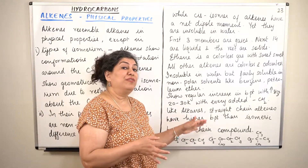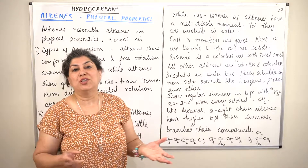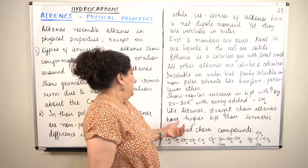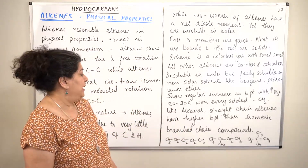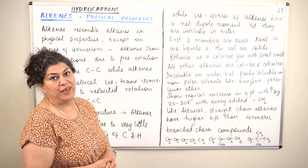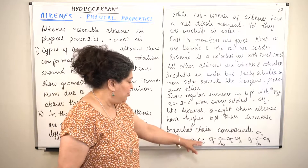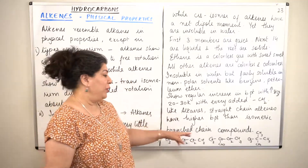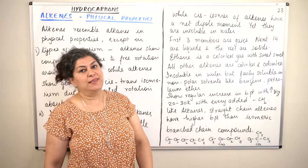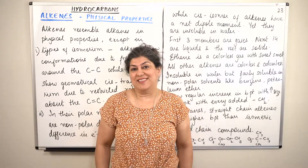Here we are talking about physical properties, so the presence of the double bond does not contribute much to the melting points and boiling points. Like alkanes, straight chain alkenes have higher boiling points than isomeric branched chain compounds. So these were the physical properties of alkenes.